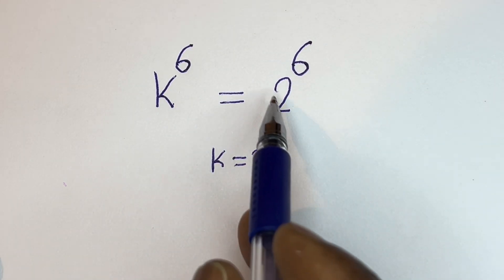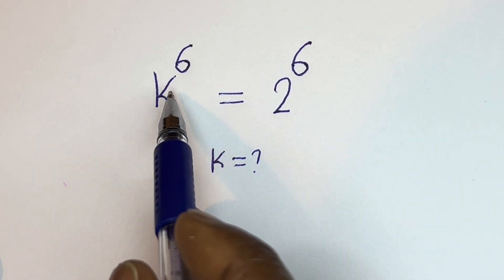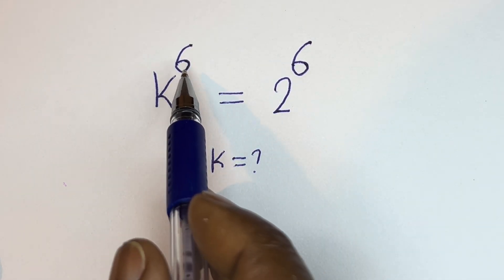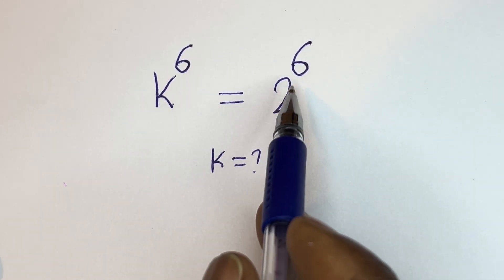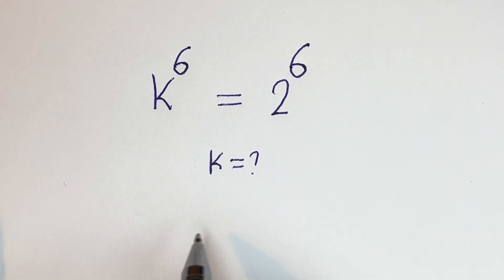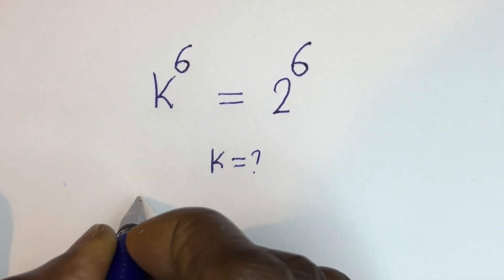Hello. How to solve for k in this equation: k to the power of 6 is equal to 2 to the power of 6.